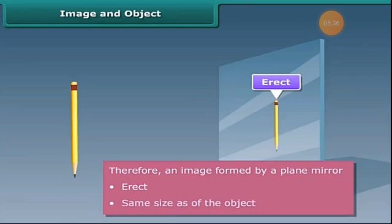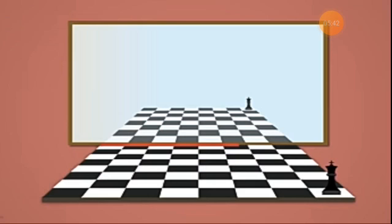You can verify it yourself. All you need is a chess board. Here we have taken a chess board and a chess piece, say a king. Keep the plane mirror at the edge of the chess board as shown on the screen.